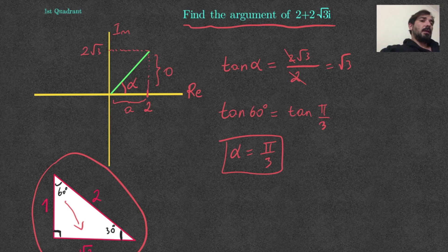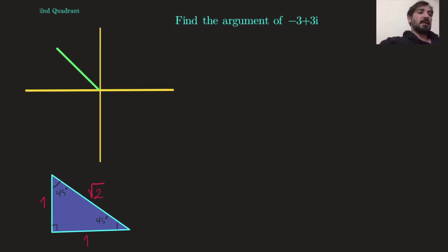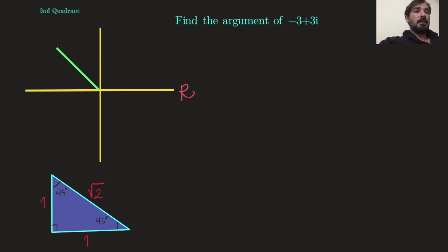Now let's see what happens in the second quadrant. Find the argument of -3 + 3i. Again, the real part is on the x-axis and the imaginary part is on the y-axis. So my real part is -3 and the imaginary part is 3.